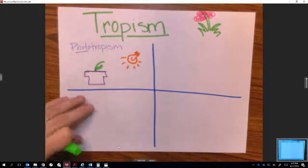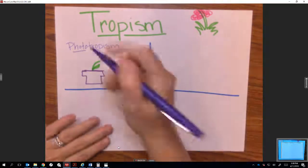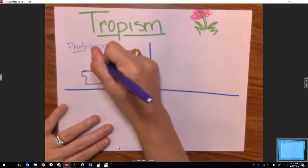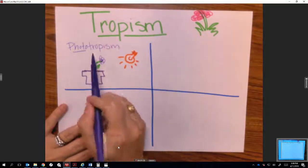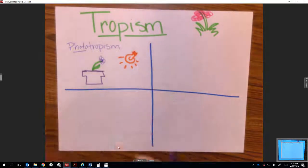This is a positive growth because it's growing towards the light, and it's positive phototropism. Phototropism is when a plant responds to light; light is the external stimulus in this case.